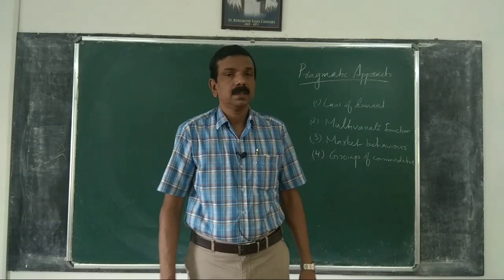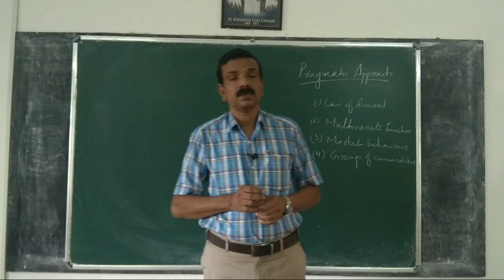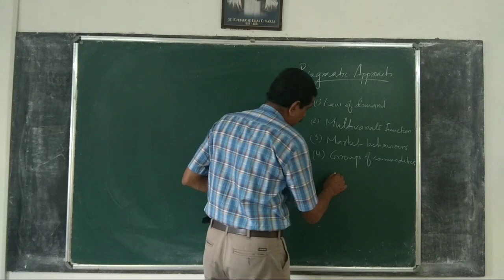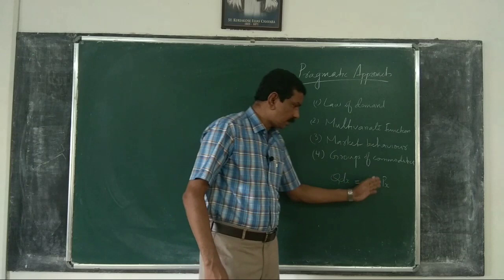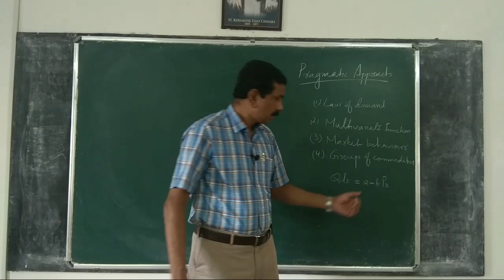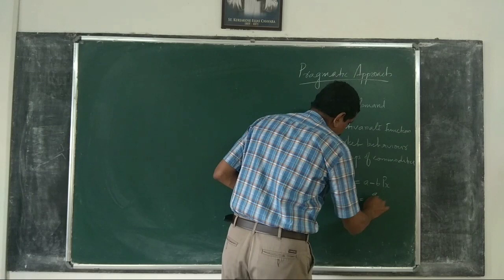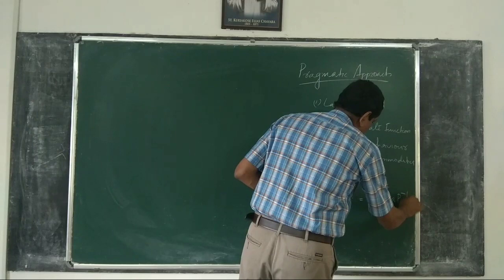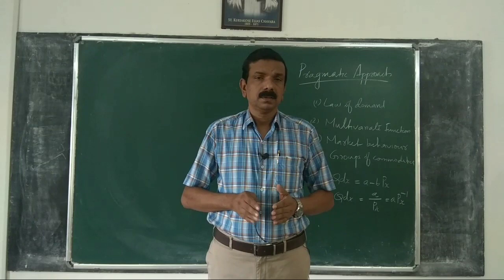Now, from your degree classes, it is known to you that mathematically the demand function can be expressed in different forms. A simple representation is a linear demand function, where Qdx is represented as a minus b·Px. Quantity demanded of the commodity is linearly related to price of x, where a and b are the coefficients, the parameters. Or, you can write it as Qdx = a/Px, or a·Px raised to minus 1. This is the famous equation of the rectangular hyperbola — a demand curve with unitary elastic demand.